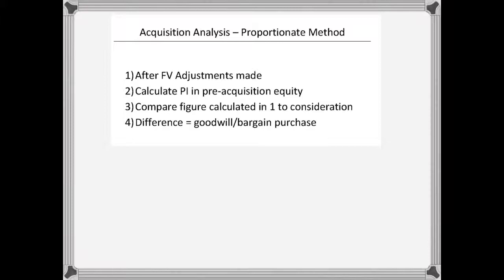Once you've made the fair value adjustments, and we've just done that, what we have to do is calculate the parent's interest in the pre-acquisition equity. Whereas what we'd normally do with a 100% ownership situation is just look at the pre-acquisition equity, compare that to the consideration amount, and that is your goodwill or bargain purchase.